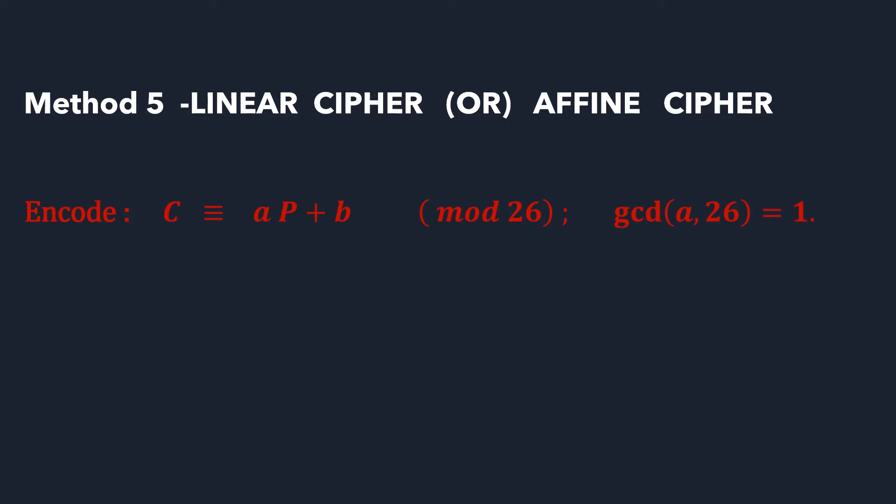Now to encode, let's take C, the encrypted message C will be a times the plain text plus b, where gcd of a,26 is 1. Now to decode, to get the plain text from the cipher text,